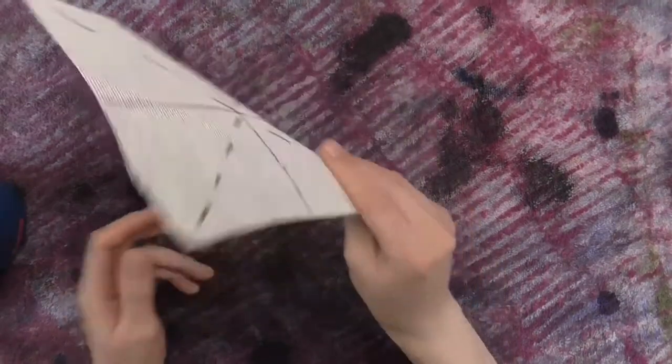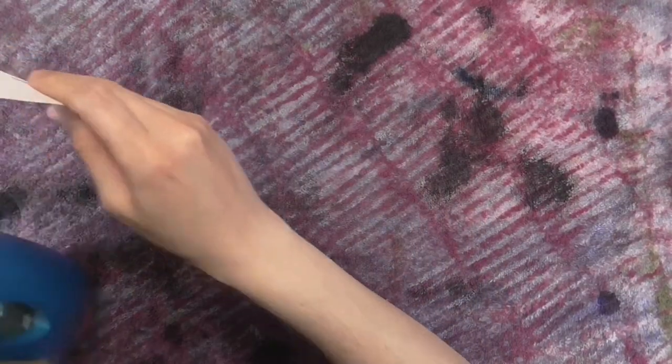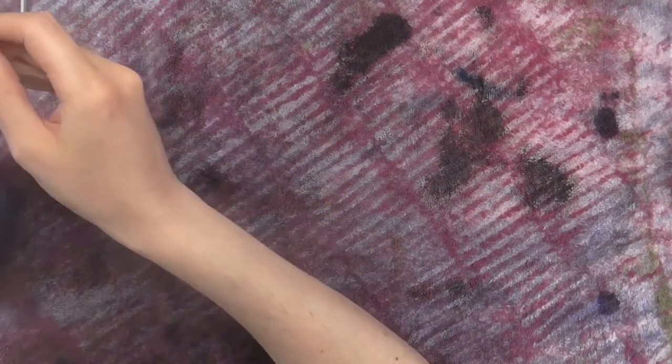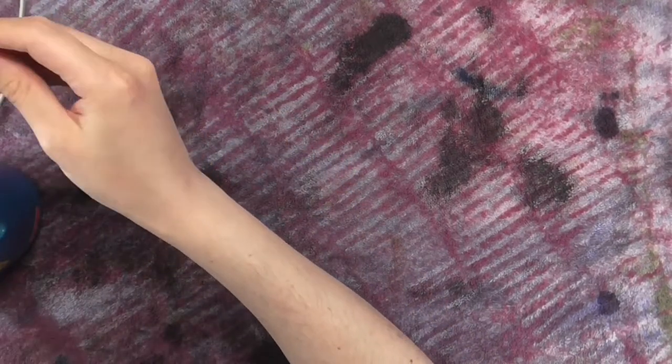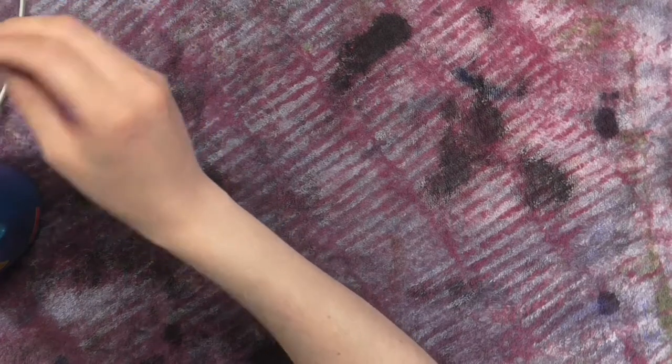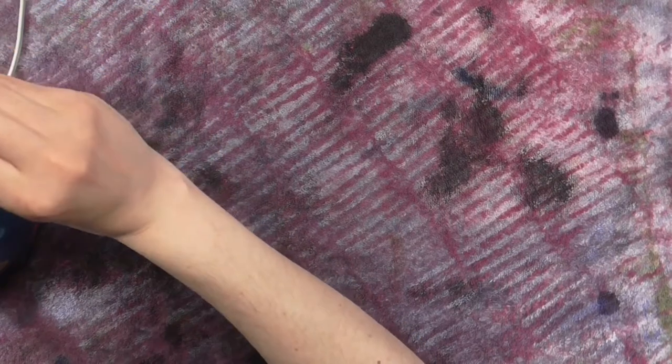To start, hold your Buckram over the steam about 2 inches away. This will soften it and make it pliable. You want to steam until you see the Buckram wilt a little. You will notice a difference in the stiffness.